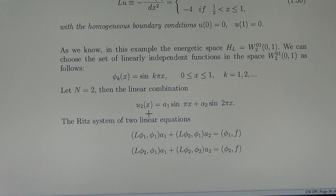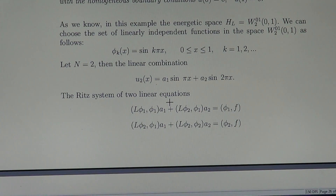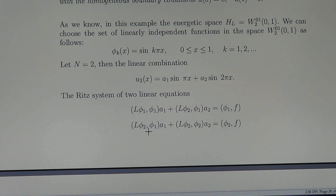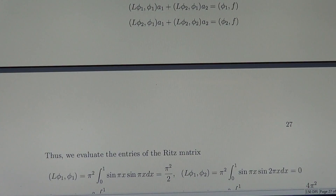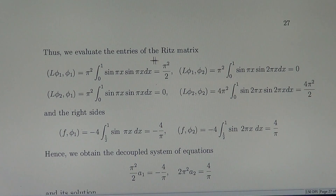Then the linear combination U_2(x) equals A1·sin(pi·x) plus A2·sin(2·pi·x). The Ritz system of equations in this case is: L(Phi_1,Phi_1)·A1 + L(Phi_2,Phi_1)·A2 equals F(Phi_1), and L(Phi_1,Phi_2)·A1 + L(Phi_2,Phi_2)·A2 equals F(Phi_2). We are able to get the coefficients — the entries of the Ritz matrix — because the operator L is minus the second derivative. Thus, we evaluate the Ritz matrix.